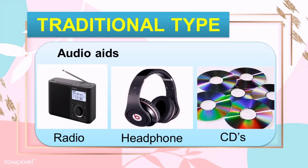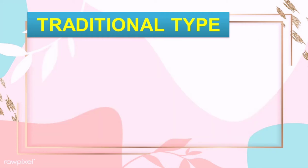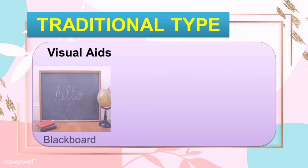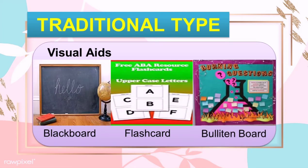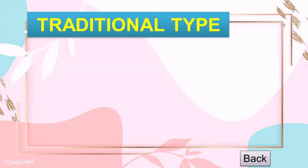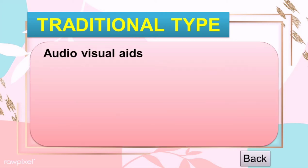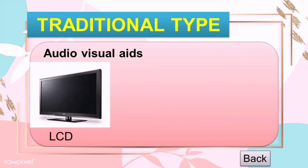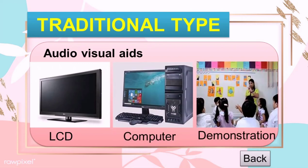The next classification under the traditional type is the visual aids. And then there are audiovisual aids like LCDs, computers, and demonstrations — these are the things that we both hear and see that help us in learning, using both senses.